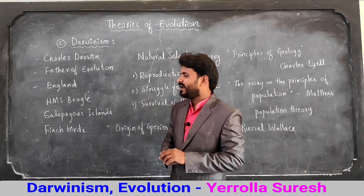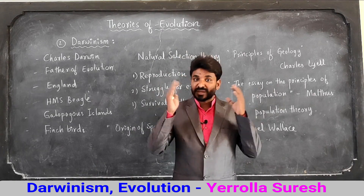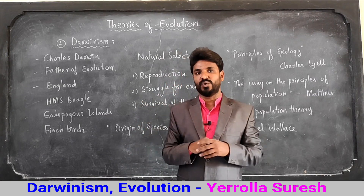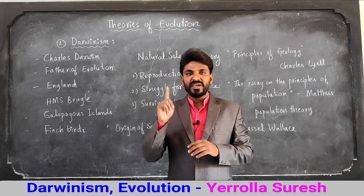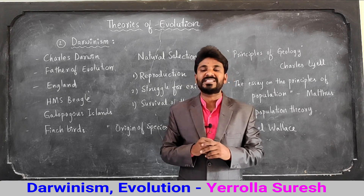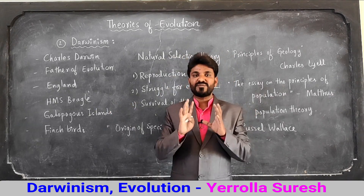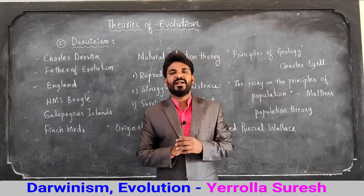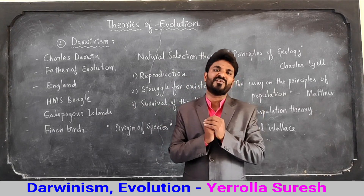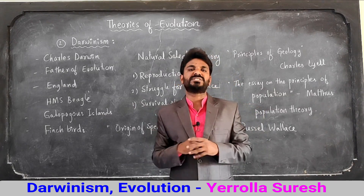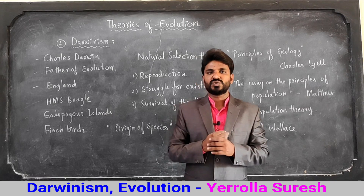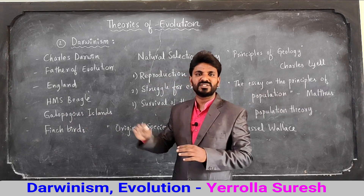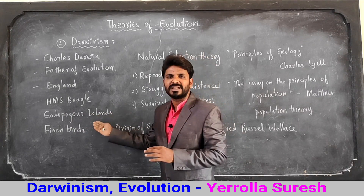Charles Darwin was an English scientist who was very much interested in observing nature, especially plants and animals, from his childhood. When he was 22 years old, he went on a world tour in a world survey ship called HMS Beagle for five years. He visited many places throughout the world and gathered a lot of information regarding the flora and fauna of different species — flora meaning plants and fauna meaning animals.